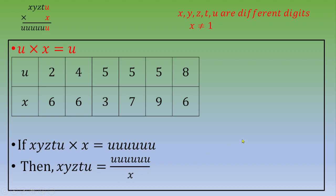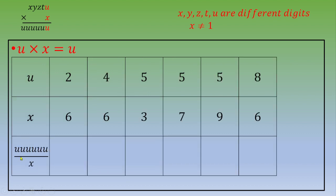So then you are going to modify the table and to add a row. And this row, you're going to add u, u, u, u, u, u over x.